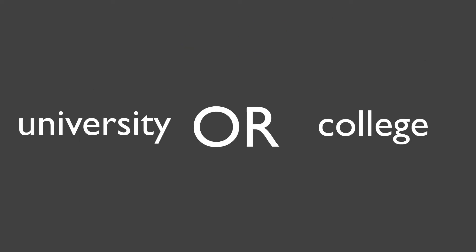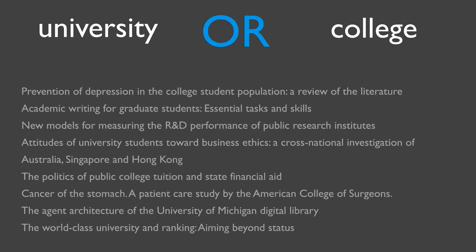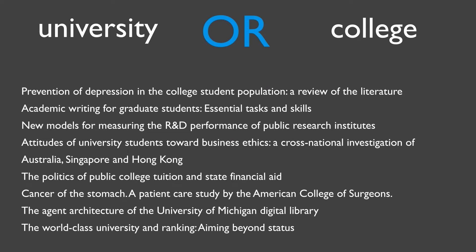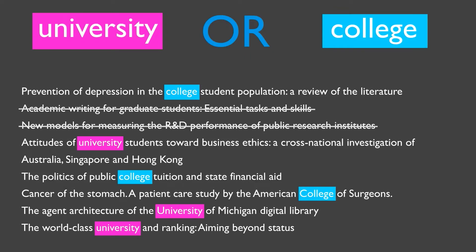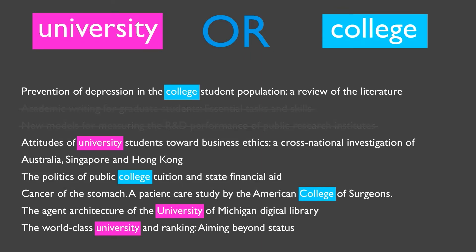Put OR between your words when you want either one of them to appear in your result, but it doesn't matter which one. In this example, it doesn't matter if the source uses the word UNIVERSITY or the word COLLEGE, since they usually mean the same thing. So in our results, some use the word UNIVERSITY, some use COLLEGE, and some might use both. So long as one of the search terms appears in the source, it will show up in our results.